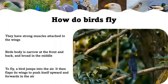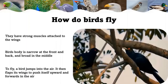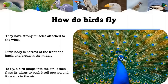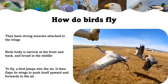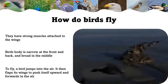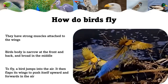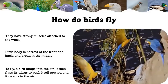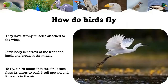Have you noticed the shape of a bird's body? It is narrow at the front and back and broad in the middle, which helps the bird to fly. Every part gives maximum power with a minimum of weight. The heavier the animal, the bigger its wings need to be, and the bigger the wings, the more muscles are needed to move them. To fly, a bird jumps into the air, then flaps its wings to push itself upward and forward. It uses its tail to turn while flying, and spreads out its wings to stop. There are more than 10,000 different kinds of birds in the world. Some birds such as ostrich, emu, and kiwi cannot fly.